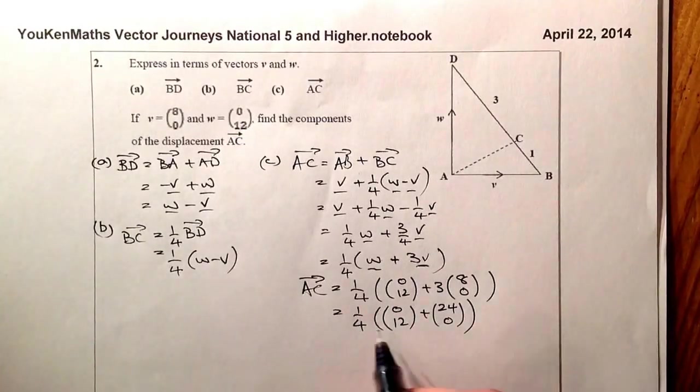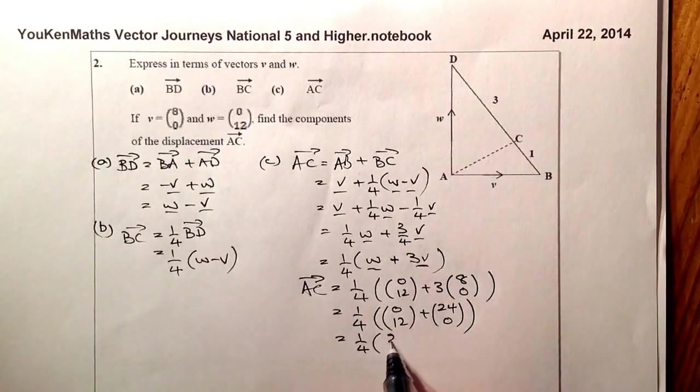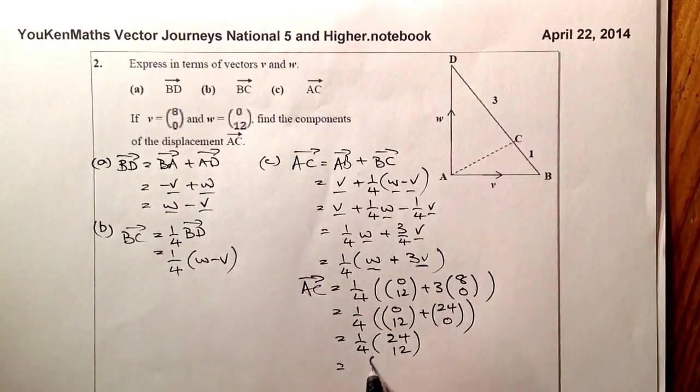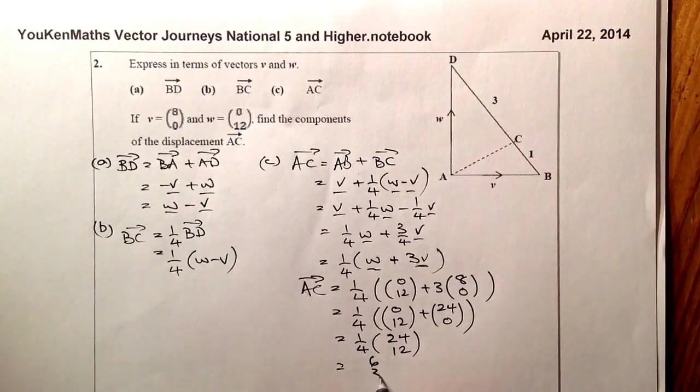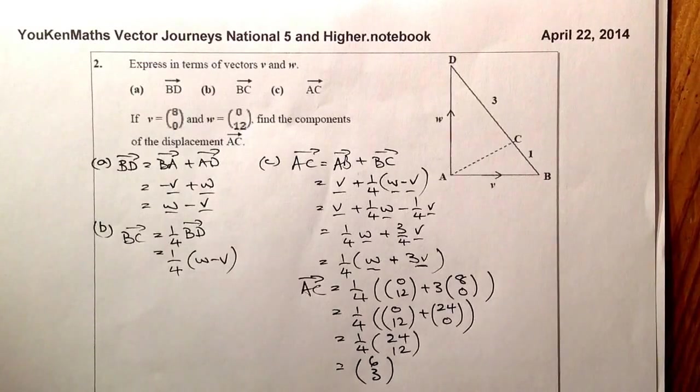and then finally what we'll do is we'll take a quarter of it. A quarter of that's going to be six on the top for the X component, and a quarter of that will be three for the Y component. So that'll be the displacement there that's represented by that vector. And that'll be the question to conclude it.